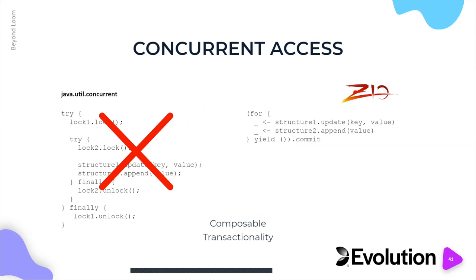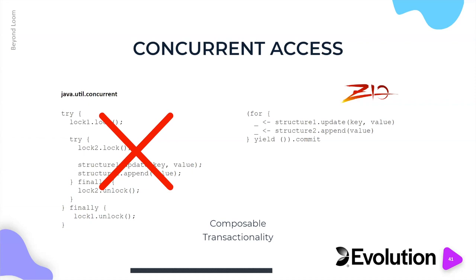For example, locks are a reliable primitive for building concurrent systems. Unfortunately they have massive drawbacks — chief among them is that locks don't compose. If you have one lock guarding one structure and another lock guarding another structure, and you want to change both simultaneously, you can't simply lock one then the other. You're asking for deadlocks. You can't acquire two locks simultaneously, and right now we don't have composable locks in JUC, so you'll deadlock your application.